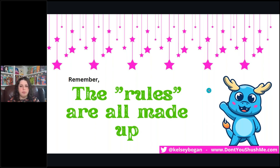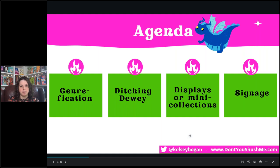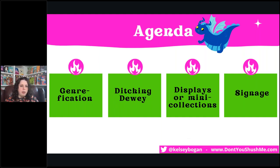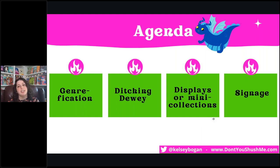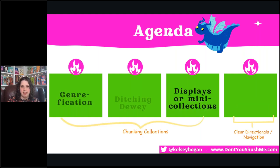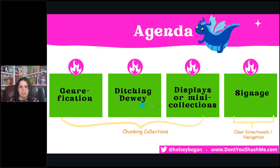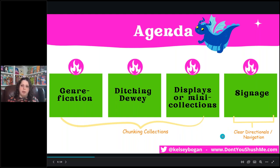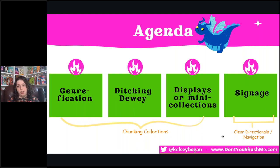Here are the topics for today. We'll start with genrefication, then ditching Dewey — those are the bigger scale changes. Then we'll talk about smaller changes: displays or pullout collections, mini collections, and signage. Genrefication, ditching Dewey, and displays or mini collections are about chunking collections to make them more accessible and independently navigable. Signage is about providing clear directionals and navigation to increase access for our users.